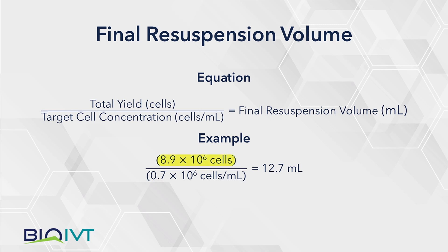In this example, divide 8.9 times 10 to the sixth cells by 0.7 times 10 to the sixth cells per milliliter for a total resuspension volume of 12.7 milliliters.